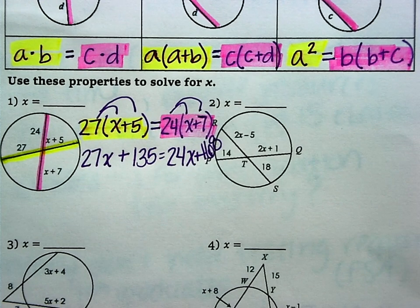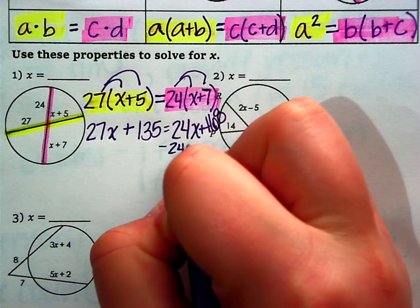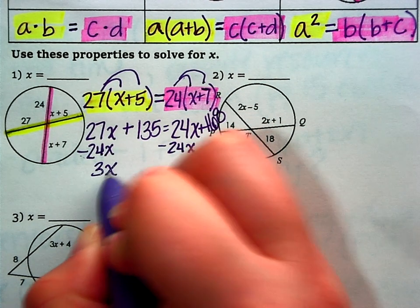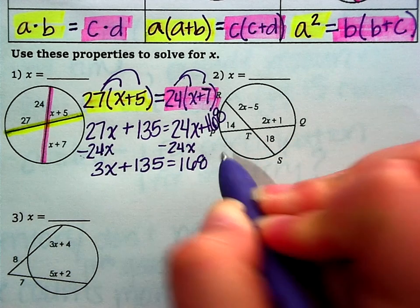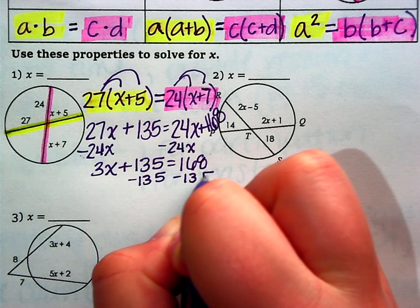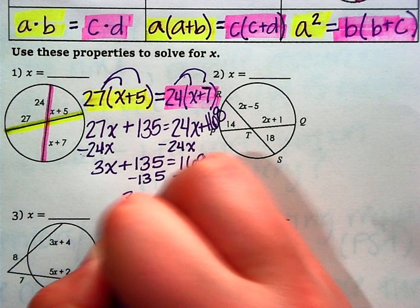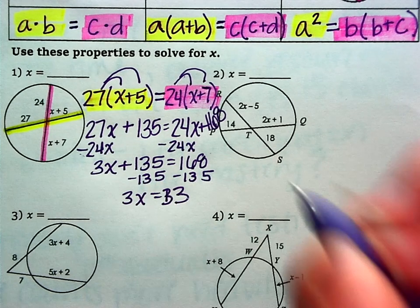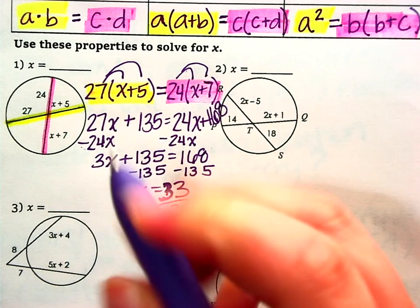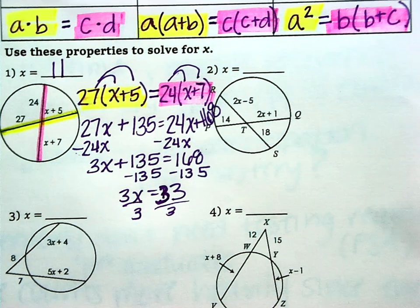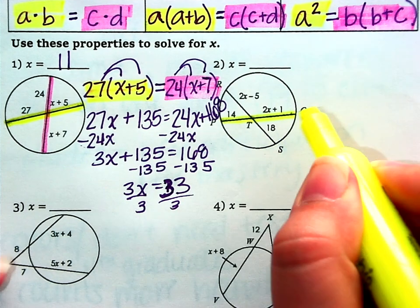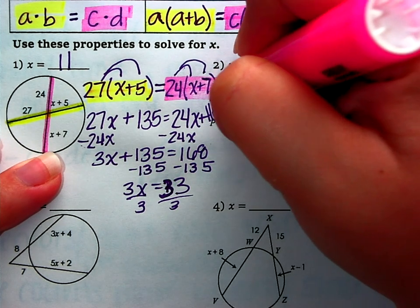And then we will just solve for x. So I'm going to subtract the 24x over the equal sign. So that will give us 3x plus 135 equals 168. Subtract the 135, so we have 3x equals 33. Divide by 3, x is 11. So you'll solve number 2 in the same way. Identify the parts of the chord that are going to be multiplied and set it up the same way.